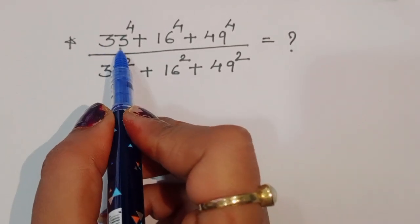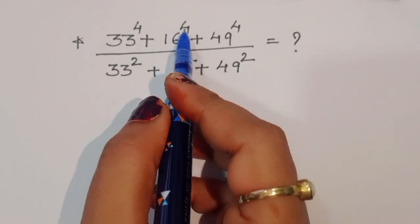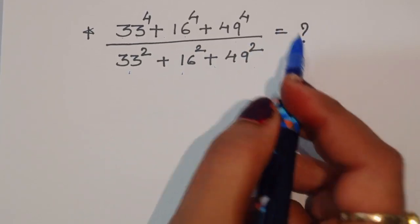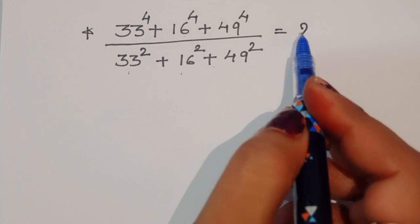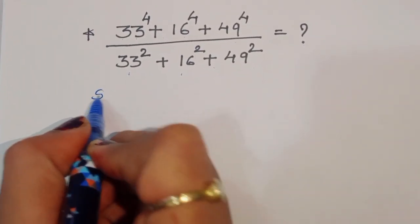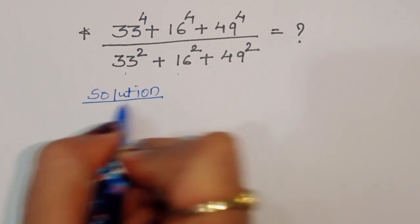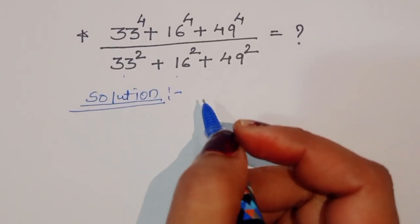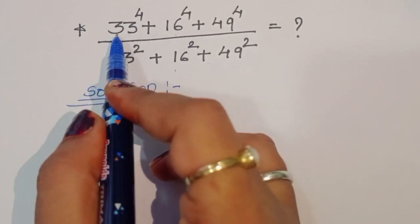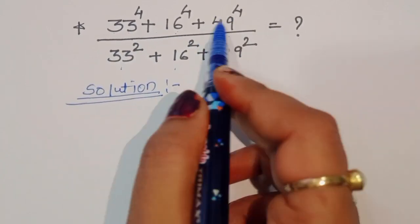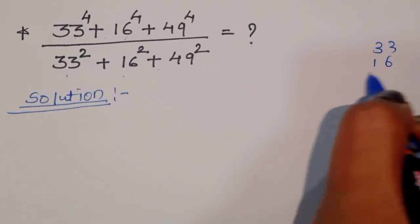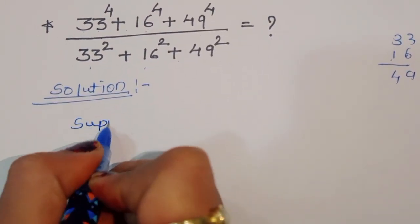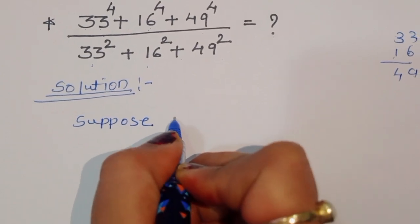The question is: given (33⁴ + 16⁴ + 49⁴) divided by (33² + 16² + 49²), what is the value? We have to find out the value of this term. Notice that 33 plus 16 equals 49 — 6 plus 3 is 9, and 3 plus 1 is 4, giving 49.